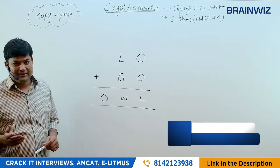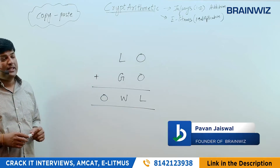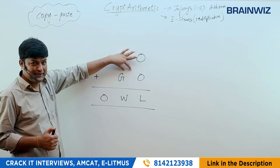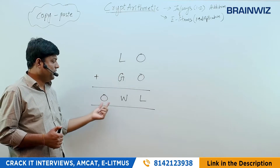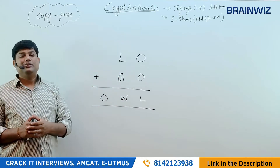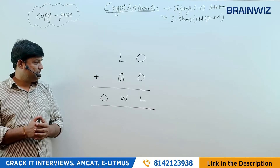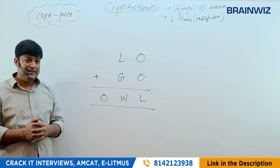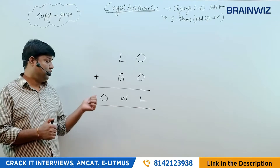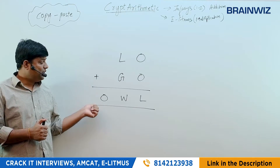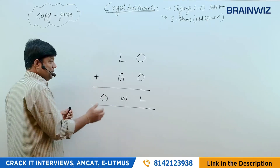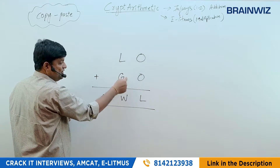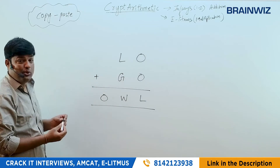Now let's go to the second question. LO is a two-digit number, GO is a two-digit number, and we're getting OWL. You can get a hint by watching the question carefully: whenever you add L and G you're getting O — so when you add LG you get this O, meaning O has to be 1.